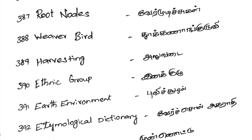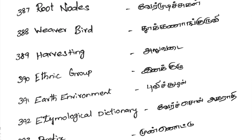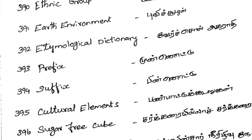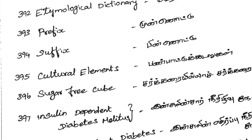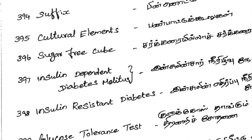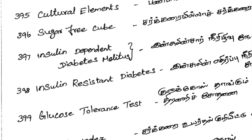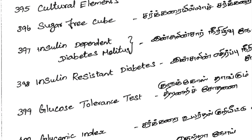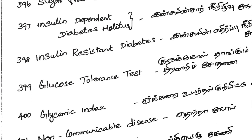Ethnic Group — Inakulu. Earth Environment — Puvichulal. Etymological Dictionary — Virtual Agaradhi. Prefix — Munnottu. Suffix — Pinnottu. Cultural Elements — Panpattu Kuuruhal. Sugar-Free — Chakkarai. Insulin Dependent Diabetes Mellitus. Insulin Resistant Diabetes Mellitus. Glucose Tolerance Test — Glucose Thangum Thirinary Sothanai. Glycomic Index — Sarkkarai.